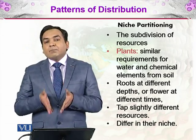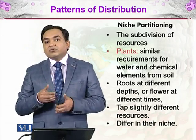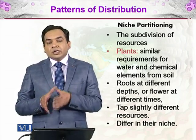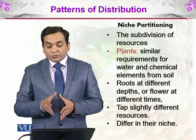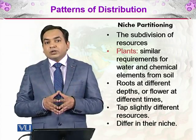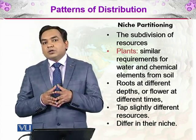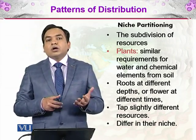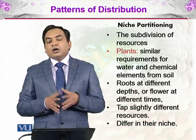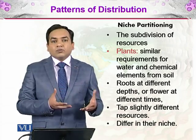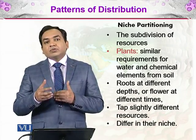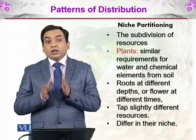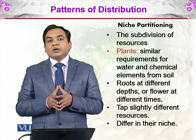To avoid competition, plants may have roots that go deeper than neighboring plants so they can access water from depth without competing. They may also root at different depths or flower at different times. If plants flower simultaneously, there is competition for pollinators like bees. To avoid this, plants flower at different times, tapping slightly different resources and therefore differing in their niche, even though the resources themselves are the same.